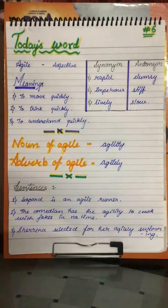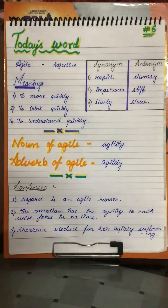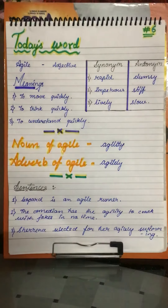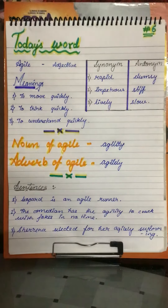Second sentence: The comedian has the agility to crack jokes in no time. You have seen Kapil Sharma, right? He can make jokes on the spot, you can say.